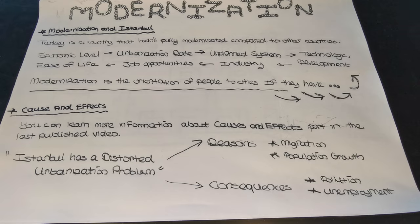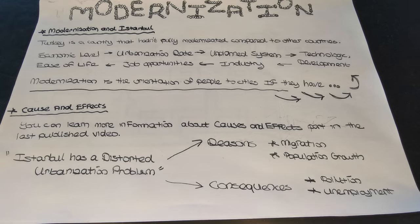Based on this, problems such as the need for housing, traffic, unemployment, and lack of infrastructure constitute distorted urbanization. Istanbul is a city that hasn't fully modernized compared to other cities — the economic level of Turkey is less than its rate of urbanization. Therefore, this leads to an unplanned system while the economic system isn't adequate. Modernization is the country's adaptation to developments in technology, economy, and industry. Countries where unplanned urbanization is a major issue cannot find solutions during the modernization process; the most important of these problems is economic problems arising from lack of planning.